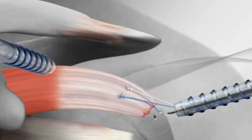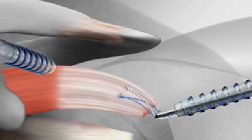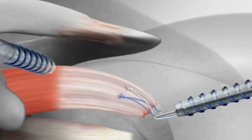The double row rotator cuff repair is complete when both sutures are securely fixed to the bone in all four sockets.